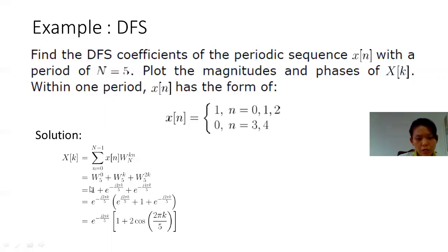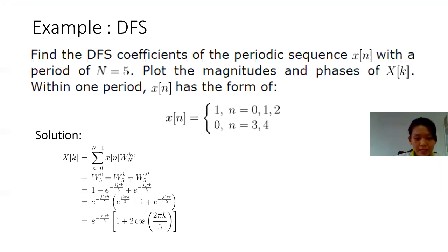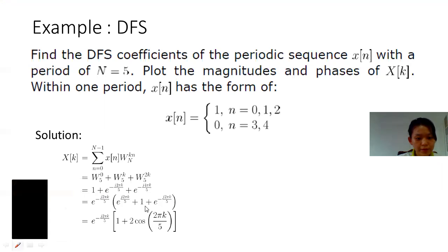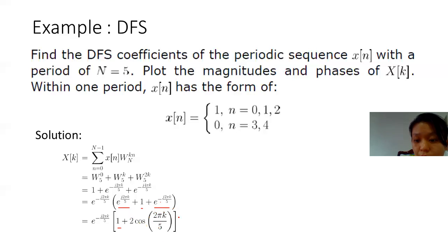When we factor out the exponential minus 2j·pi·k/5, we have to multiply accordingly so that we can factor it out. After factoring, the first term becomes 1. The second term has exponent 4·pi·k/5, which is 2 times 2·pi·k/5. So the remaining bracket has 1 plus exponential of minus j·2·pi·k/5 added with its conjugate, which gives us 2·cos(2·pi·k/5).